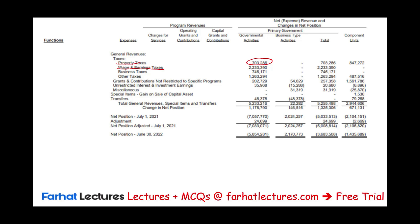At the bottom of the statement of activities, we have general revenues — for example, property taxes, wages and earnings taxes (paid by those who work in the city), business taxes, and other taxes. These are general revenues that don't belong to any particular program. We also have grants and contributions not restricted to programs, special items such as gain on sale of capital assets, and transfers in and out.